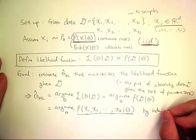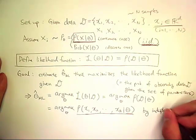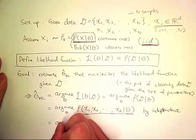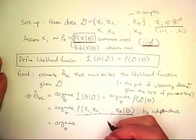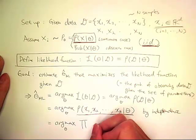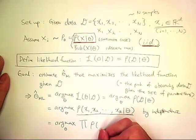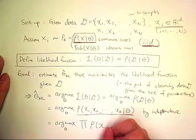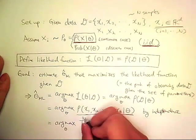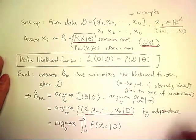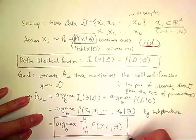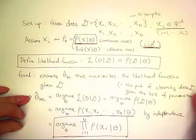We have this independence assumption earlier. So using that independence assumption, I can rewrite this as argmax of theta and the product of probability of observing each sample x sub i given theta. So i is equal from 1 to n. This is an objective function for maximum likelihood estimation.